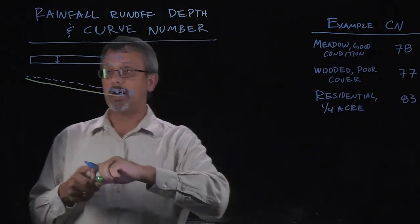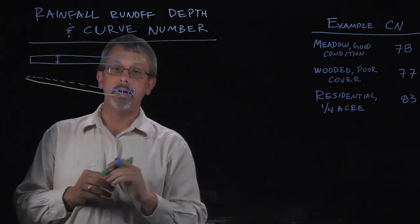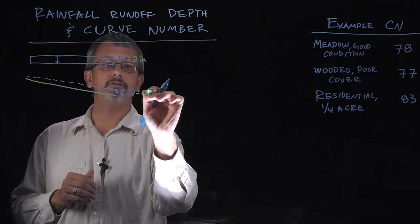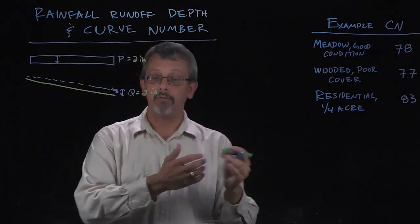In other words, you might receive maybe two inches of rainfall in a particular area, and you might only get half an inch equivalent of water that flows off of the region.